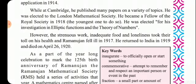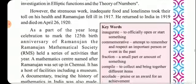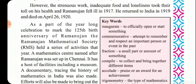He became a Fellow of the Royal Society, elected for his investigations in elliptic functions and the theory of numbers. However, strenuous work, inadequate food, and loneliness took their toll on his health. Ramanujan fell ill, returned to India, and died on April 26, 1920.